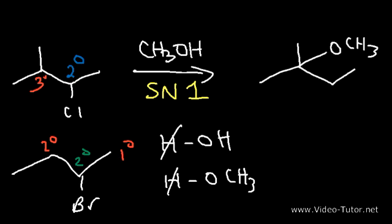Notice that we're not going to get a racemic mixture of stereoisomers. This particular carbon is not chiral — we have two methyl groups attached to it, so you're only going to get one major product. You're not going to get a racemic mixture. Now if that carbon were chiral, you would get the inverted product and the retention product — but it's not chiral, so we won't have to worry about stereochemistry.